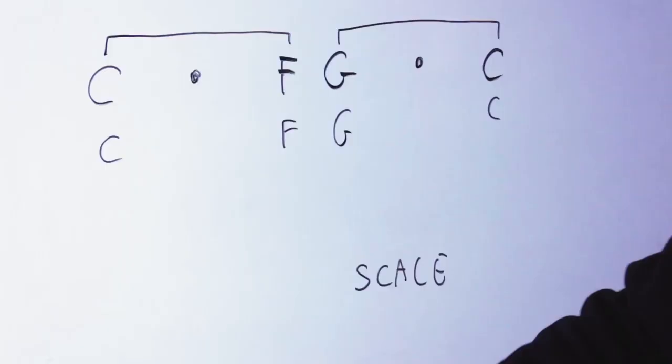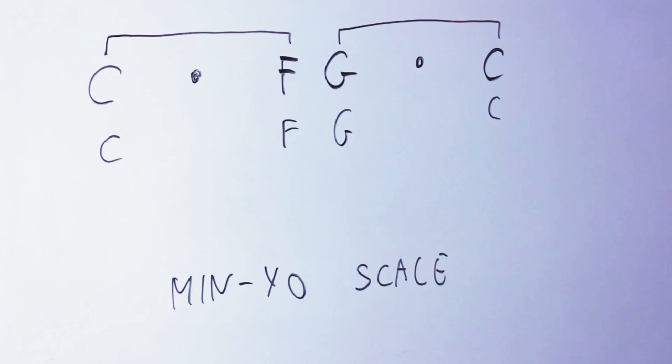The second scale is the Min-Yo scale, which is the scale you obtain when the middle note of your trichord is a minor third above the lowest note. So, in this case, it's C, E flat, F, G, B flat, C, and guess what? You know this scale already because it's just the minor pentatonic.